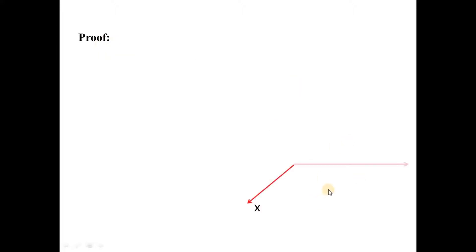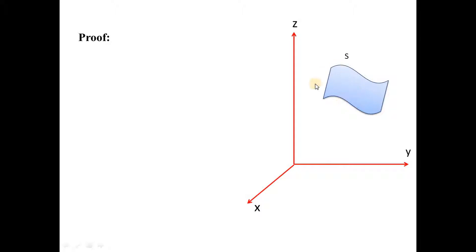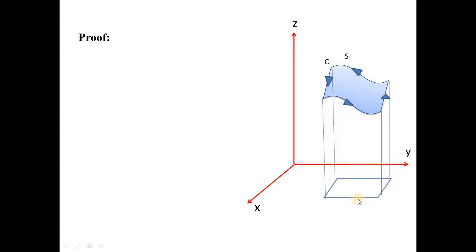For the proof, let us first consider the coordinate axes X, Y, and Z, and let S be the surface area bounded by a closed curve C, with the direction of this closed curve taken to be anti-clockwise. We take the projection of this surface on the XY plane, and let R be the region bounded by a closed curve C1. Let DS be the elementary surface area with its normal component n-cap, and the projection of DS in region R has normal component k-cap.